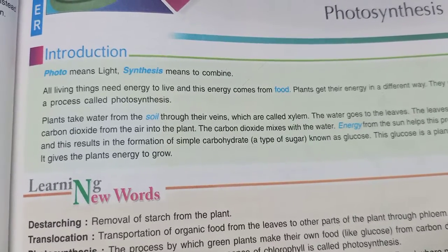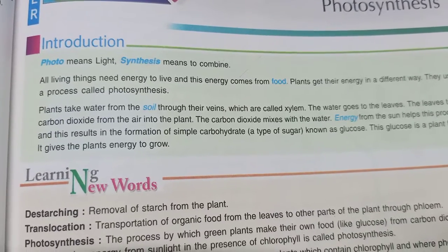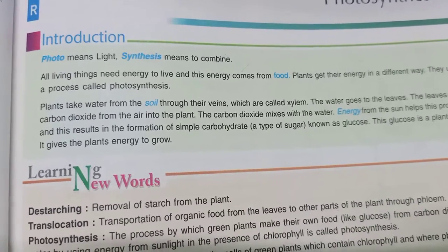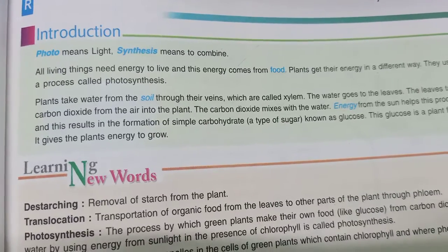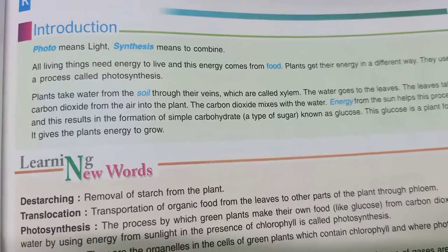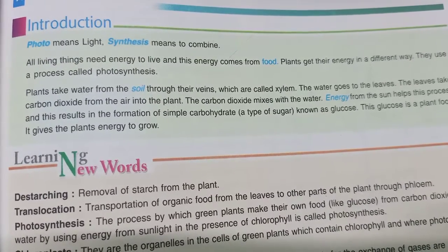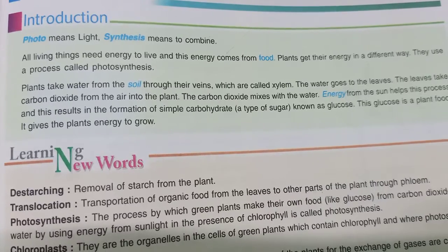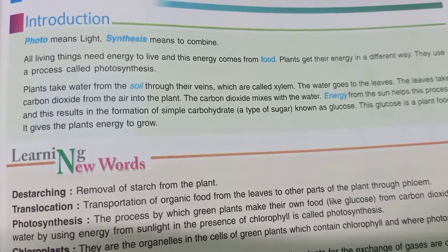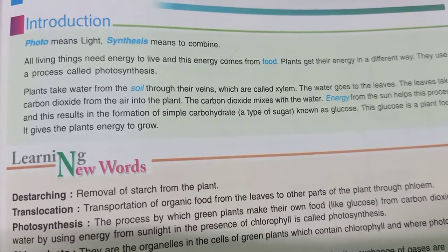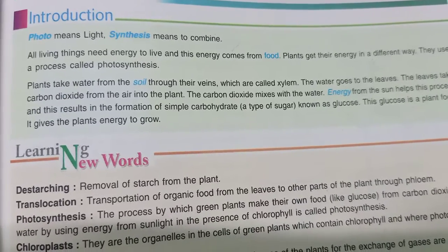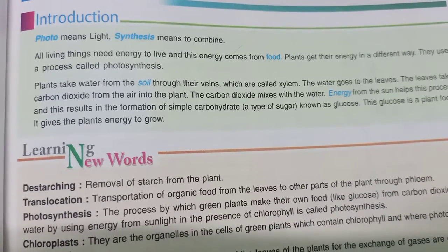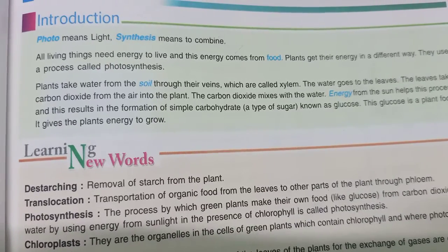Plants use the process of photosynthesis for converting energy and making food for themselves. Plants take water from the soil through their veins called xylem — which you have already studied in the tissue chapter. The water goes to the leaves, which take in carbon dioxide from the air. The carbon dioxide mixes with water, and energy from the sun helps this process, resulting in the formation of a simple carbohydrate — a sugar known as glucose. This glucose is the plant's food and gives it energy to grow.